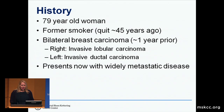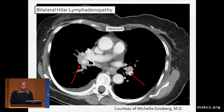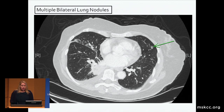Diagnosed one year previously, she had bilateral lumpectomies. On the right side she had an invasive lobular carcinoma, and in the left breast she had an invasive ductal carcinoma. She now presented with widely metastatic disease. Chest CT shows a right lower lobe mass, bilateral hilar lymphadenopathy, multiple bilateral lung nodules, multiple new brain lesions, and bone lesions.